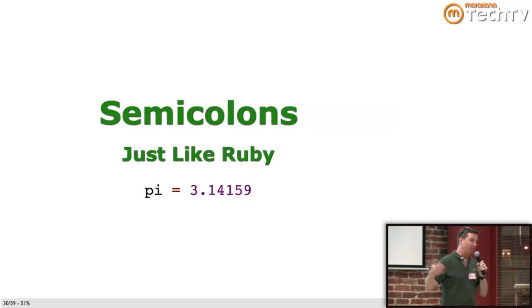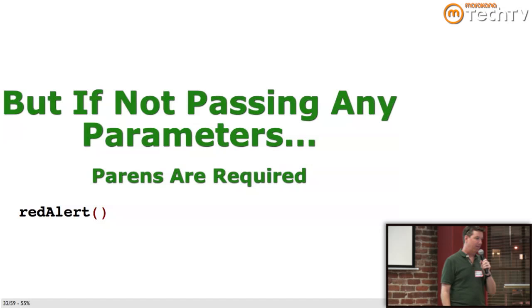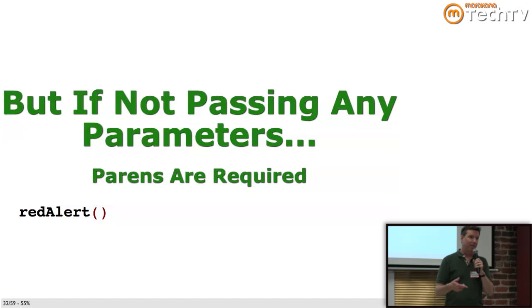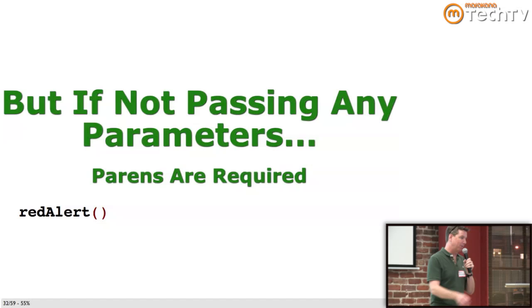Semicolons are just like Ruby — in other words, you don't use them. Or you can in the middle of a line if you want. Parentheses are a lot like Ruby — they're optional. The implied open parenthesis extends all the way to the end of the expression. They're required if you're not passing any parameters, because unlike Ruby, in CoffeeScript there are no symbols. So if you're calling a function with no parameters, then you use parentheses.